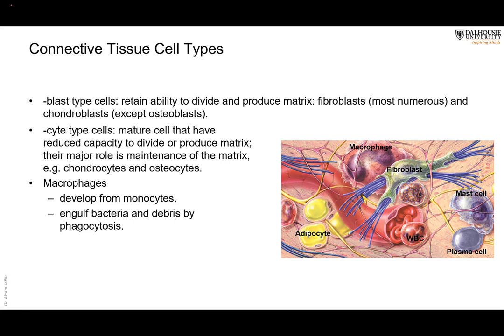We also have macrophages — 'macro' meaning large, 'phage' meaning to eat, so they perform phagocytosis. They are developed from monocytes, which are circulating white blood cells. Monocytes leave blood vessels and reside in connective tissue as macrophages. For example, macrophages in the alveoli of the lung take up carbon and dust particles. That's why the lungs of a smoker appear mottled with black substance.